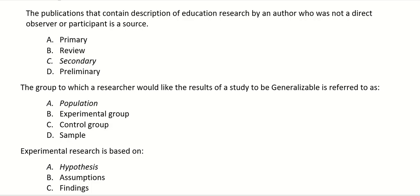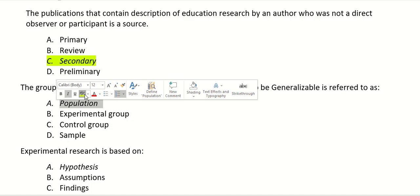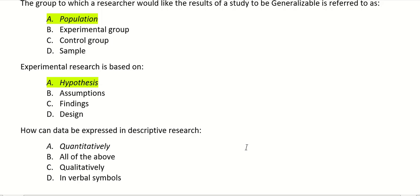A publication containing a description of educational research by an author who was not a direct observer or participant is a source of — the right answer is secondary. The group to which a researcher would like the results of a study to be generalizable is referred to as a population. Experimental research is based on hypothesis — the right answer is hypothesis.